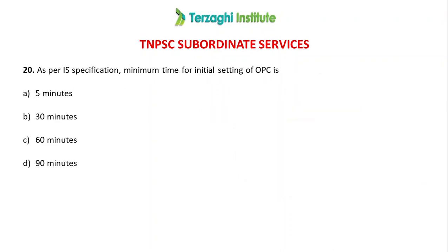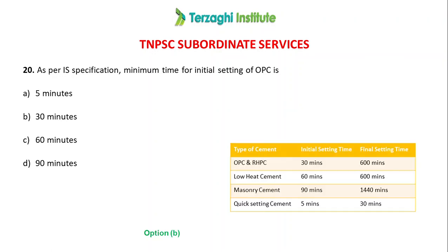As per IS specification, the minimum time of initial setting of Ordinary Portland Cement is 30 minutes. The options are 5 minutes, 30 minutes, 60 minutes, and 90 minutes. Quick setting cement has an initial setting time of 5 minutes. Masonry cement is 90 minutes. Low heat cement is 16 minutes. OPC is 30 minutes. The answer is Option B — 30 minutes.